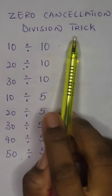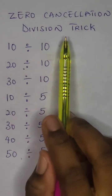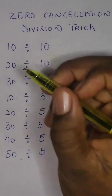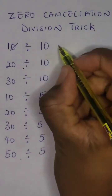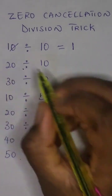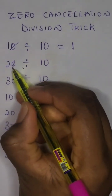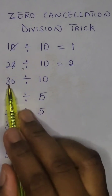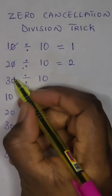Short division trick: dividing by zero constellation. So we have 10 divided by 10 — strike out the zero, equal to 1. That is 1. 20 divided by 10, cancel out the zero, we have 2. 30 divided by 10, cancel out the zero, we have 3.